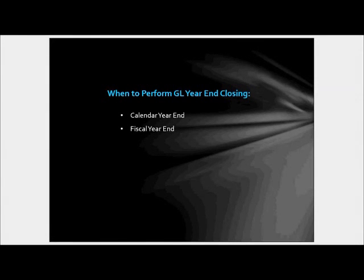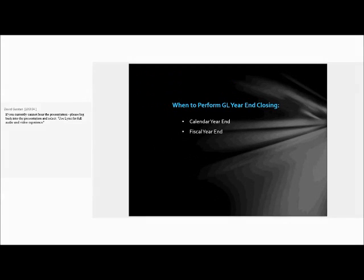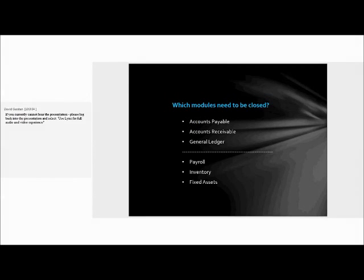The first question that comes up during a year-end close discussion is: when do we close the year? That differs from company to company based on whether you are following a calendar year or your company's own fiscal year. The modules that are generally closed in the GP system are accounts payable, accounts receivable, general ledger, payroll, inventory, and fixed assets — that's just naming the big six.